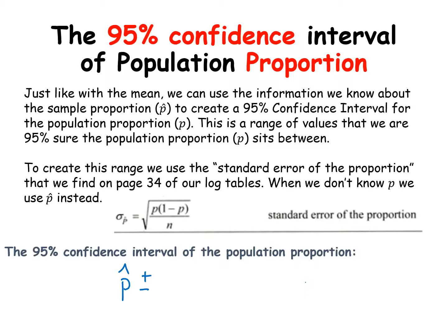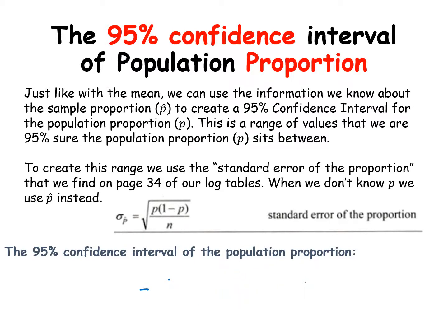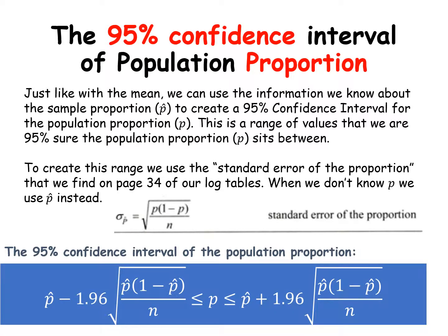Because we're dealing with 95% confidence, we use 1.96. That value is multiplied by the standard error of the proportion. Since we don't know p and we're trying to find the interval for p, we use p-hat in the formula instead. When we write it out properly with inequality signs, it looks like this: p-hat minus 1.96 times the standard error of the proportion is less than or equal to p, which is less than or equal to p-hat plus 1.96 times the standard error of the proportion.